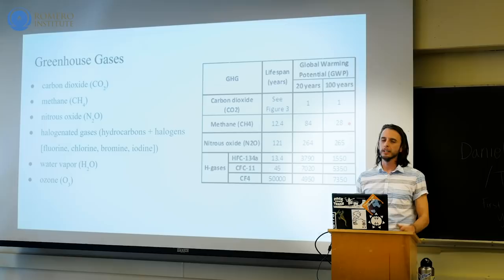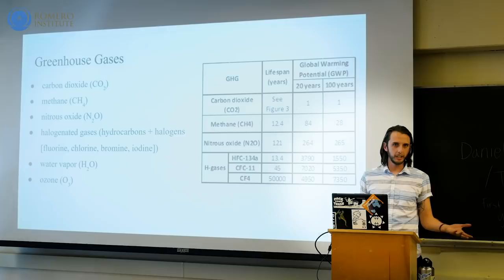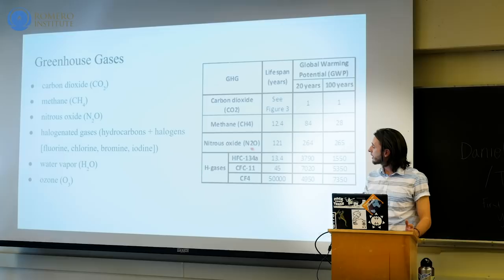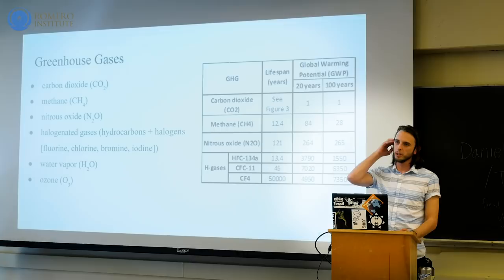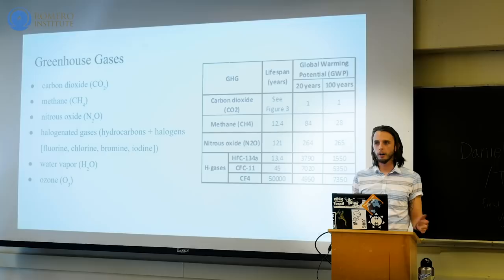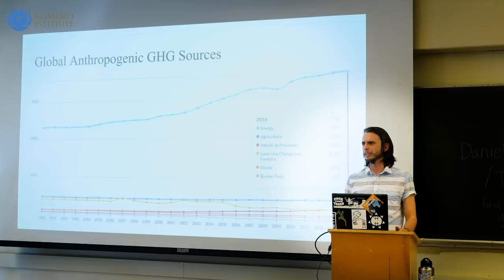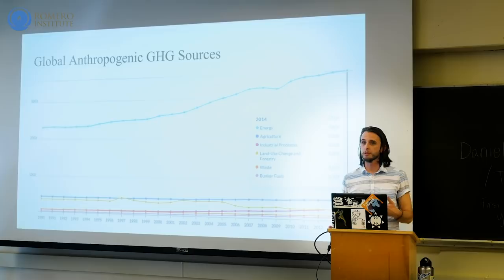Nitrous oxide has a fairly long lifespan and about 264 times more global warming potential than carbon dioxide. The halogenated gases are artificial gases mostly used in industrial processes, so it's actually a little easier for us to phase them out over time. This is basically a global breakdown of where greenhouse gas emissions are coming from — about 40 gigatons of carbon in 2014. Energy emissions include things like coal, natural gas, transportation, and fossil fuel use — some of the biggest contributors.